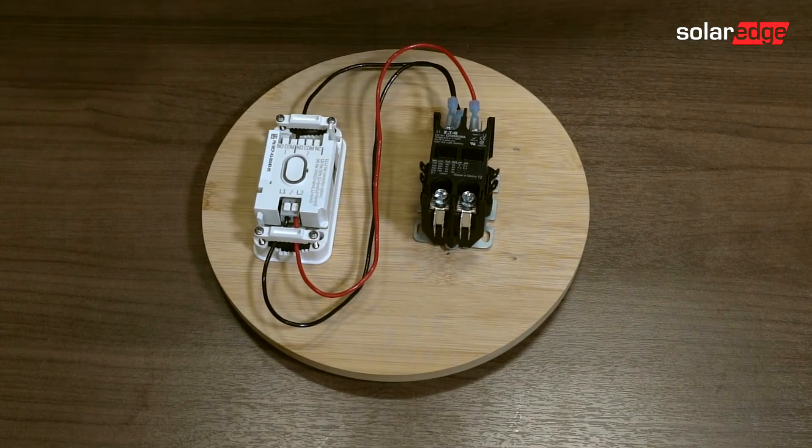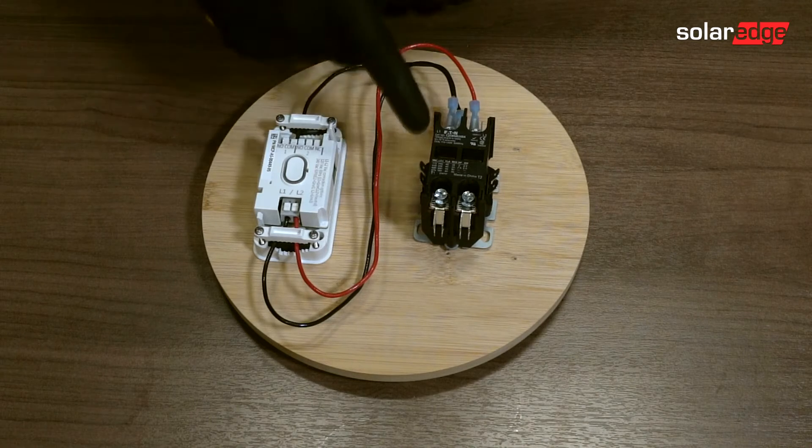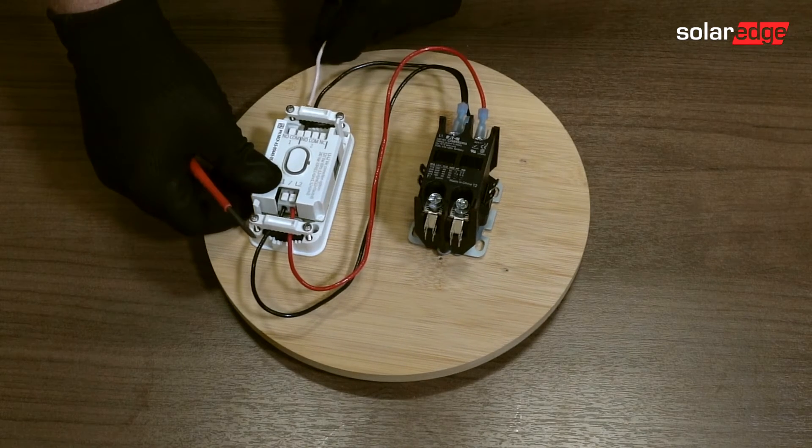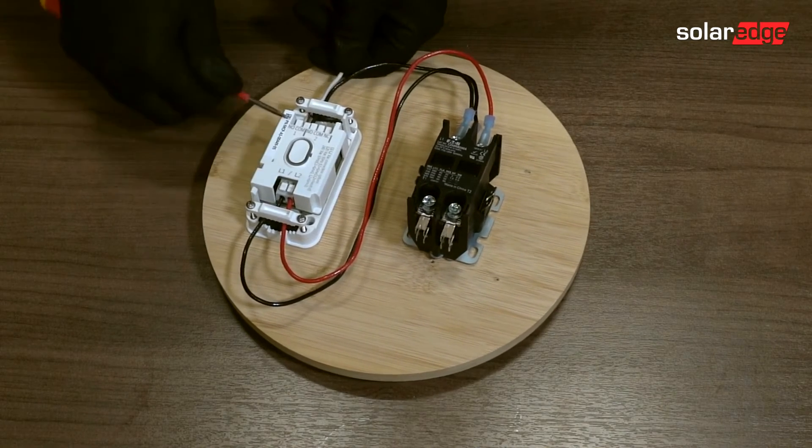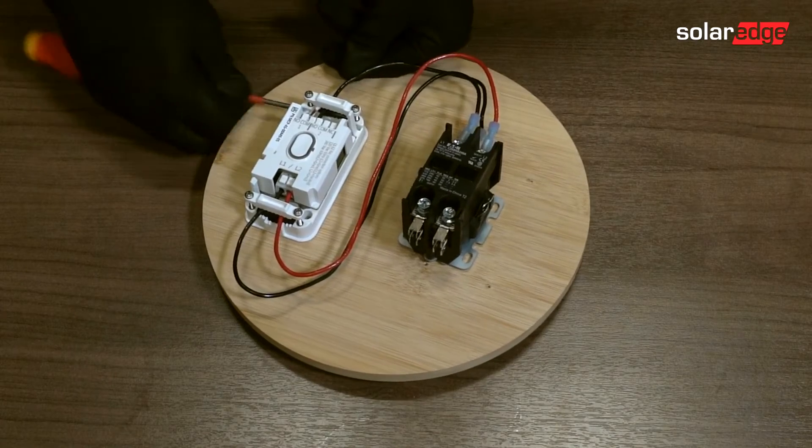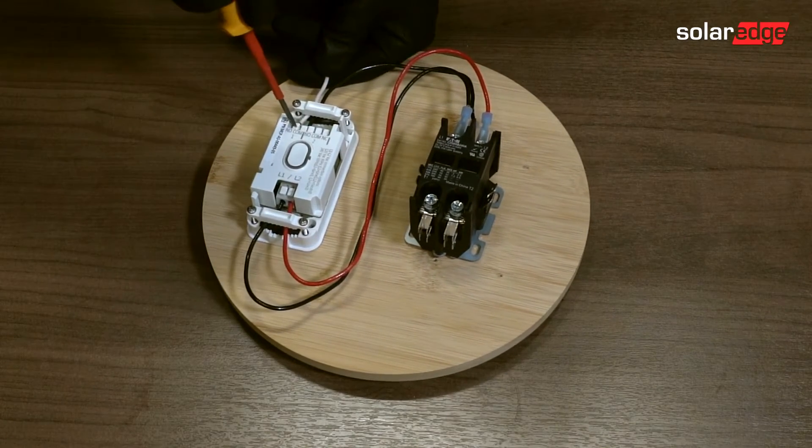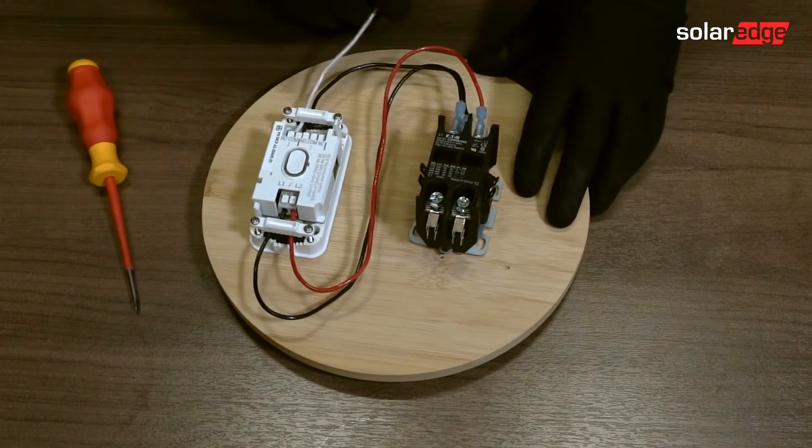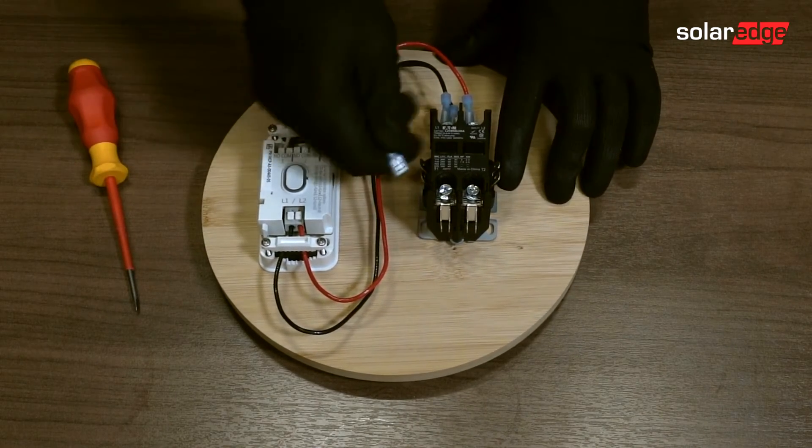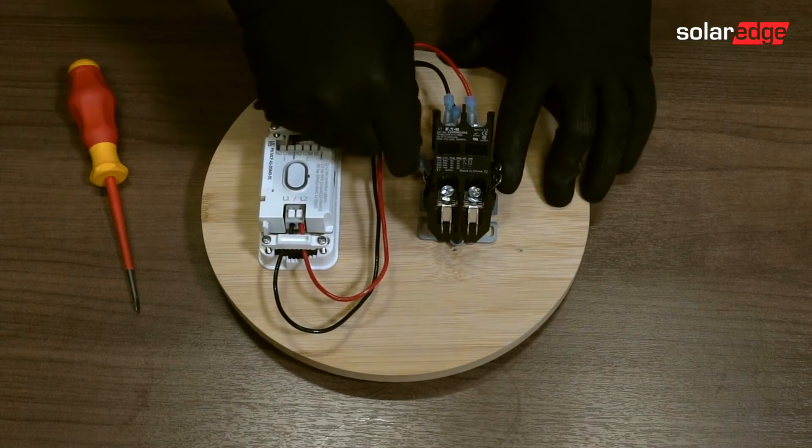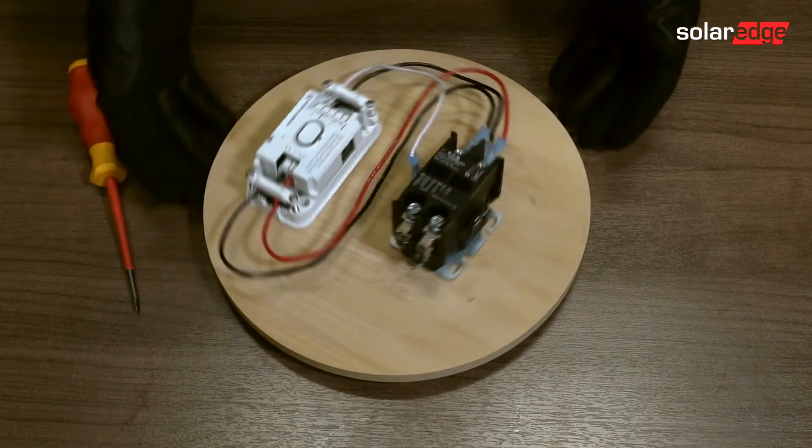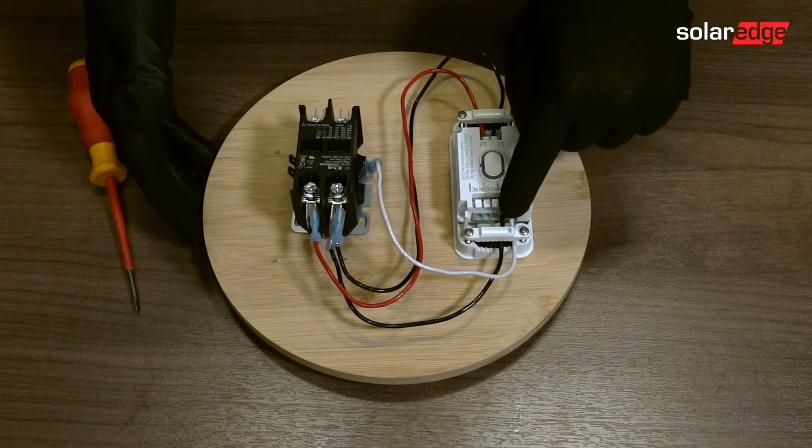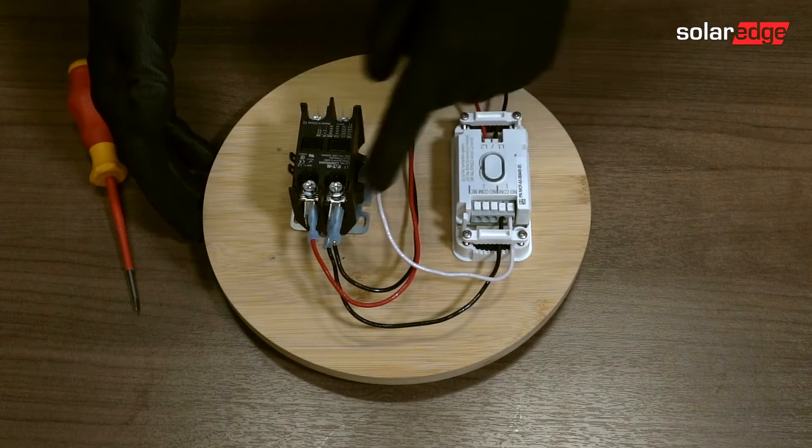And then we're going to wire our normally open to the coil. So I'm using a white conductor for the 120 volt coil to the normally open position. Again, push down on the pressure clamp, and we're going to go normally open to the coil. And then wire manage. Great. Let me give you a spin. So you can see normally open to coil and common to line one.